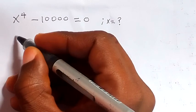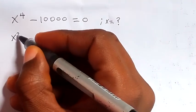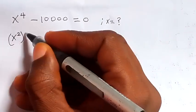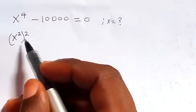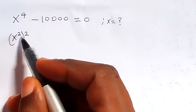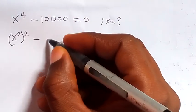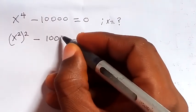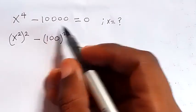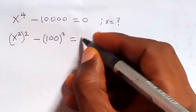Let's write this again as x raised to power 2, then all raised to power 2, which is the same thing as x raised to power 4 when these two multiply. Then minus here we can write this as 100 squared. This will give us 10,000 as well, then equals 0.